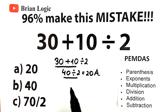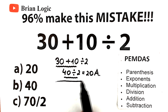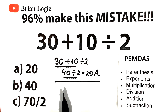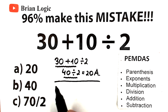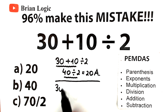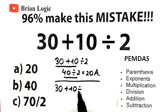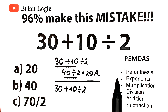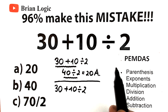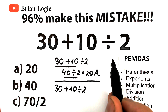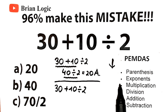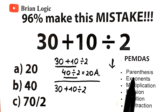If there is only one operation, we do not need to use the order of operations. So let's solve this question according to PEMDAS and check whether 20 is the correct answer. We have 30 plus 10 divided by 2. In most cases the order of operations is straightforward — we follow the correct order from top to bottom. The first step is parentheses, so we just follow the order in the figure above.